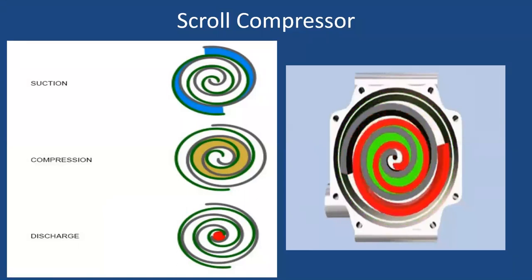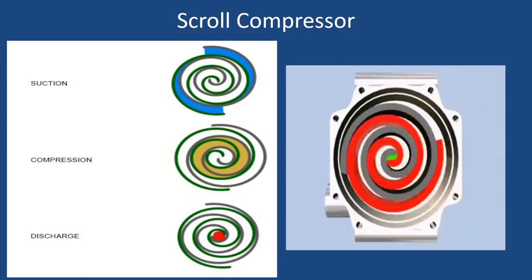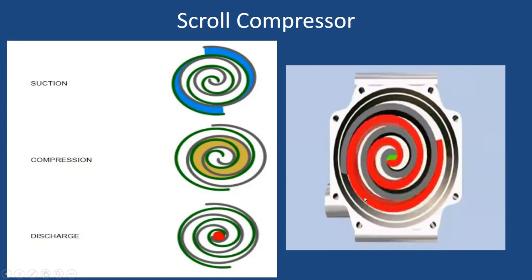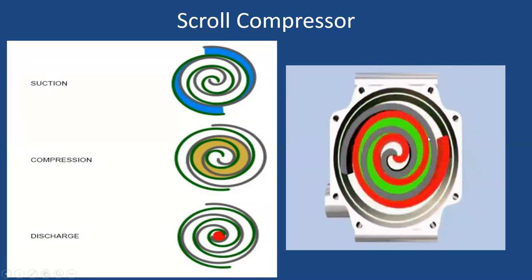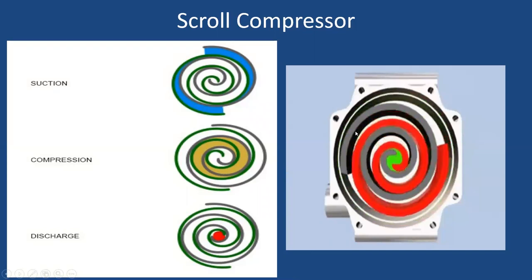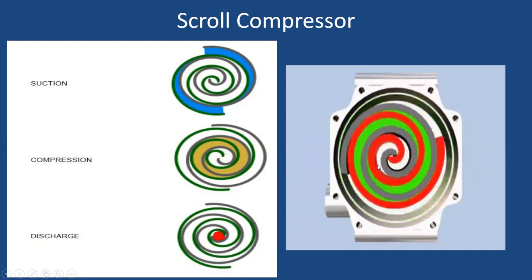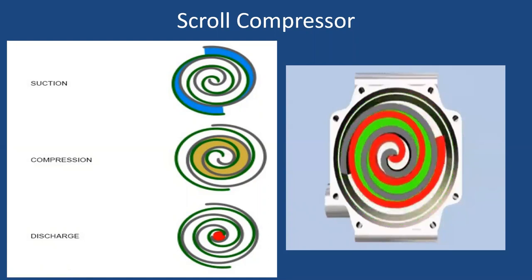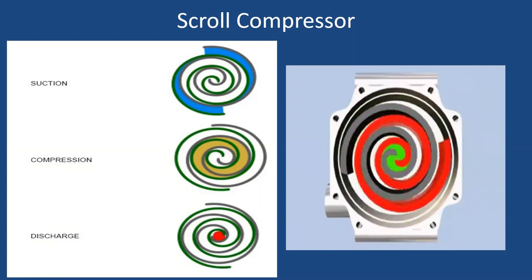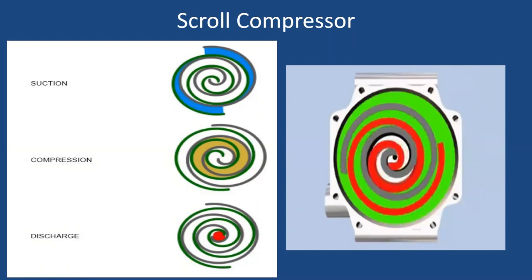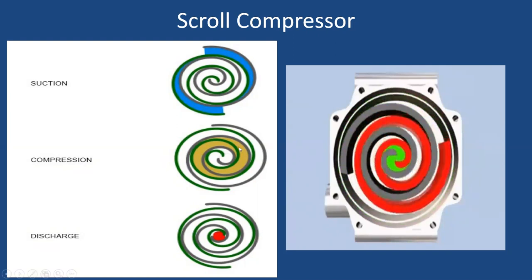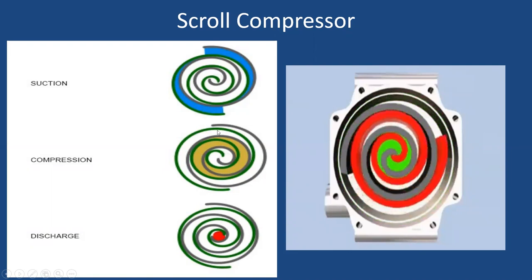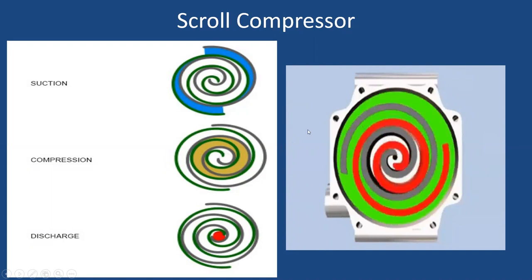The scroll compressor — Copeland is the main manufacturer — mainly consists of two scroll members: one fixed member and one orbiting moving member (shown in red). When refrigerant enters, it is trapped in the space between the two members. Due to trapping, it compresses and is then delivered. The compression process involves three stages: suction from the outer side, compression as it advances to the center, and discharge from the center outward.